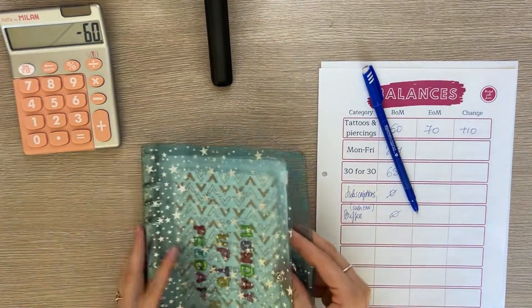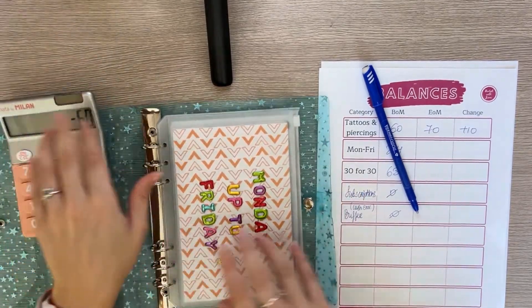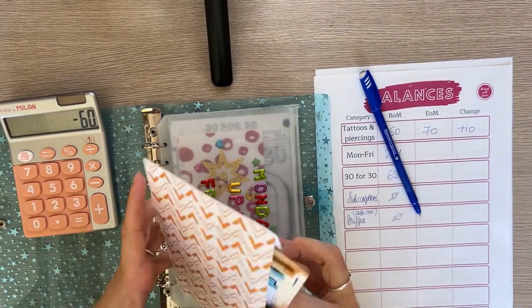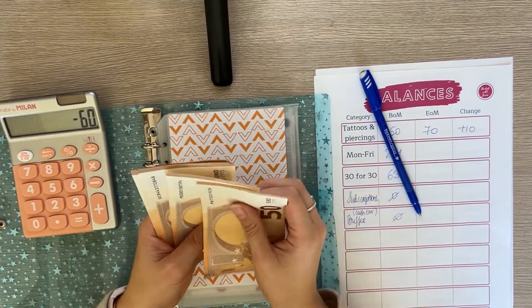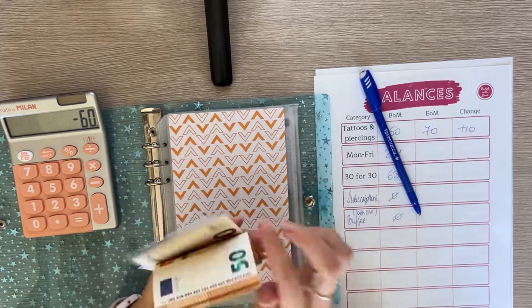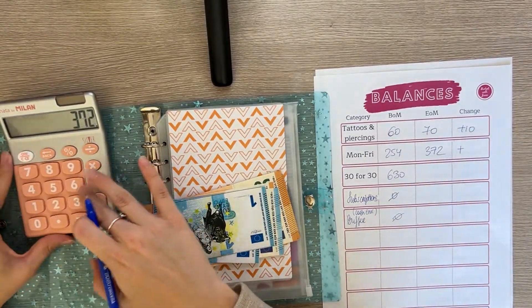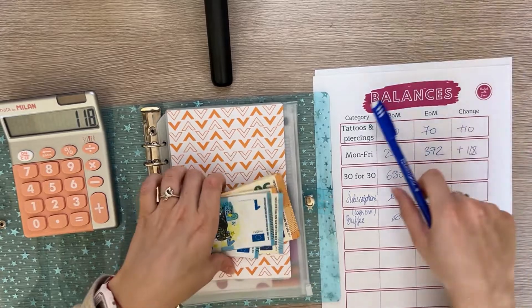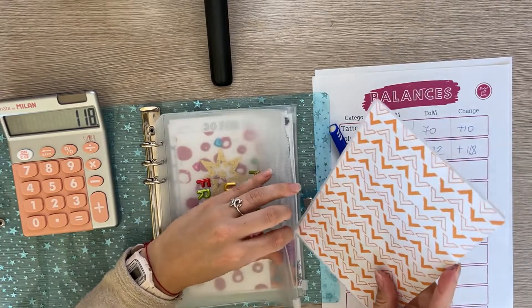This is my A5 binder. We're starting with Monday to Friday which is my savings challenge for every day of the week and now it has $372. That's 118, 18 euros positive. I'm so excited to use up this money once I'm done with this challenge and feed it back into my sinking funds.